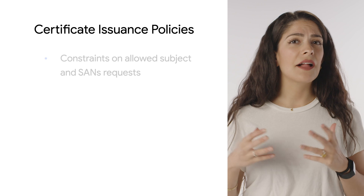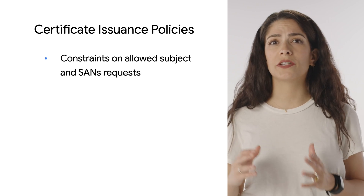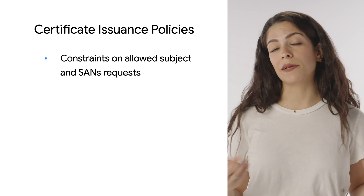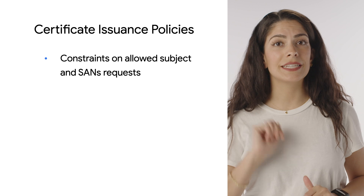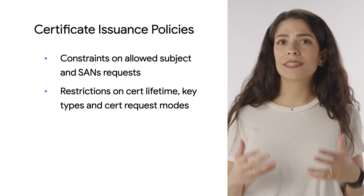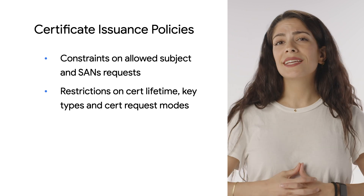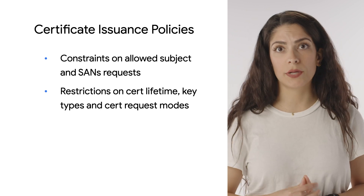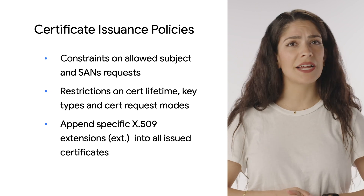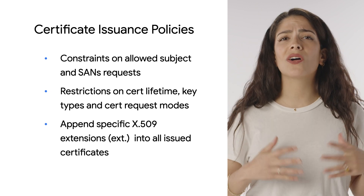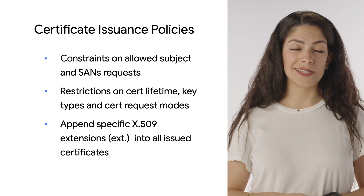Certificate issuance policies allow you to add constraints on the allowed subject and subject alternative names, or SANs, that can be requested. This validates that the correct identity is in issued certificates, and it can define restrictions on variables like certificate lifetimes, key types, and certificate request modes. Additionally, it lets you append specific X.509 extensions into all issued certificates, whether or not they were in the certificate request.